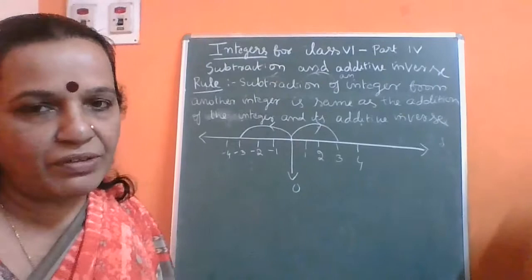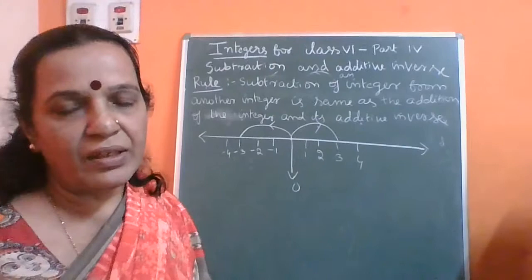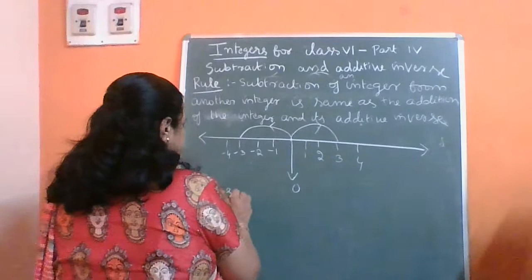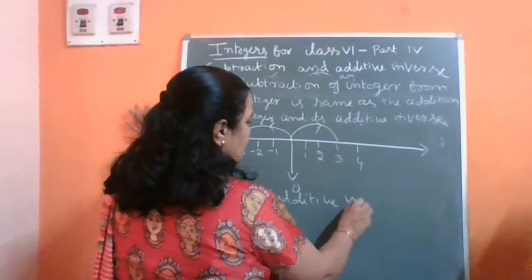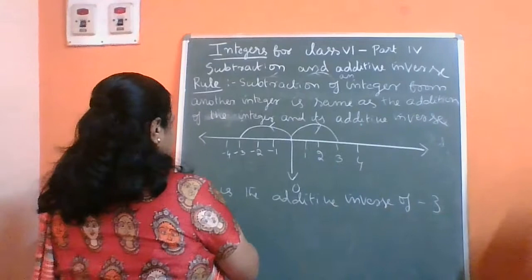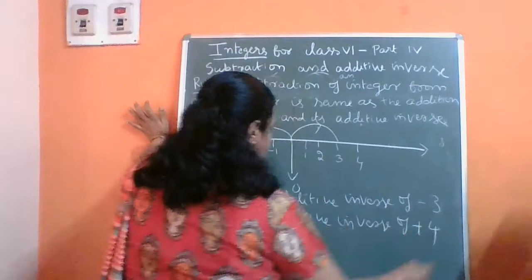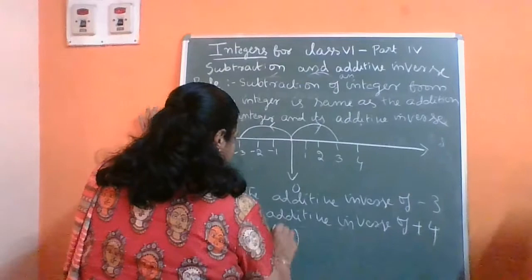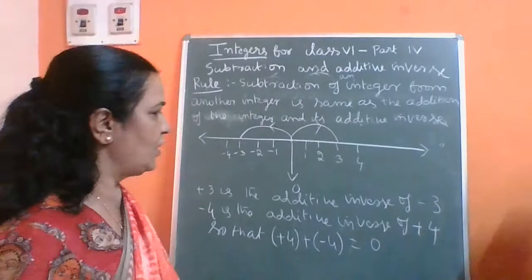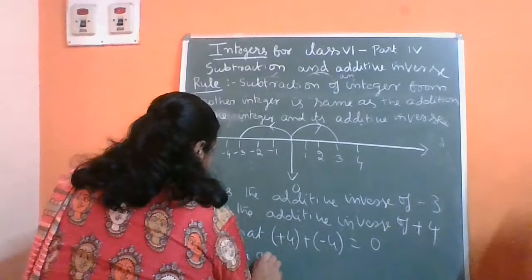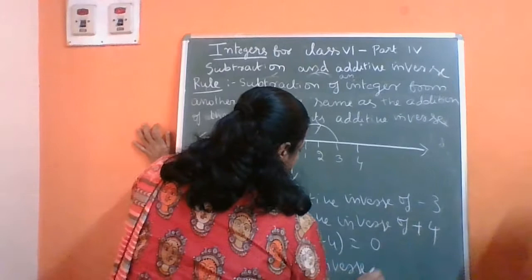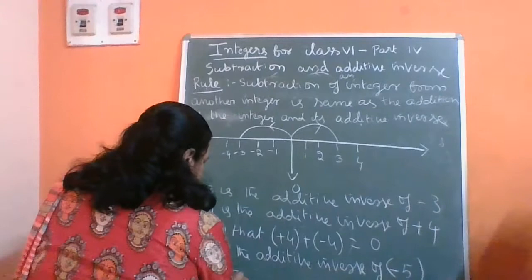That means plus 3 is the additive inverse of minus 3. And minus 4 is the additive inverse of plus 4, so if you add plus 4 and minus 4, you will get 0. Similarly, minus 5 is the additive inverse of plus 5. Therefore, when you add plus 5 to minus 5, you will get 0.